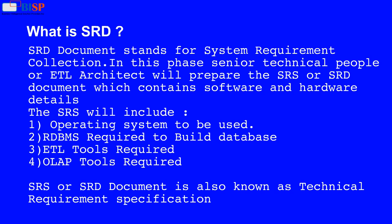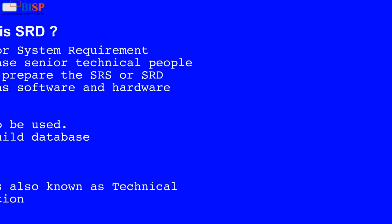The SRS will include: the operating system to be used, the RDBMS required to build the database, ETL tools required, and OLAP tools required. The SRS or SRD document is also known as a Technical Requirement Specification.